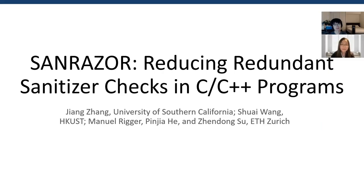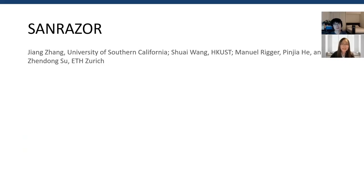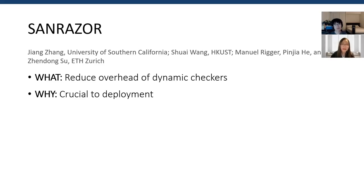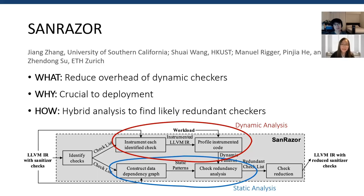The last paper in the correctness session is CERESA: Reducing Redundant Sanity Checkers in C/C++ programs, from University of Southern California, Hong Kong University of Science and Technology, and ETH. It focuses on dynamic checking at the runtime stage. This study aims to reduce the overhead of dynamic checkers, also called sanitizers. As introduced earlier, runtime dynamic checkers are effective but introduce high overhead — for example, the average overhead introduced by an address sanitizer can be as high as 33%. This work uses a static and dynamic hybrid analyzer to find likely redundant checkers, applying correlation analysis on static and dynamic patterns to infer redundancy. That is all for the preview of our correctness session — stay tuned for the talks of these five excellent papers from their authors.